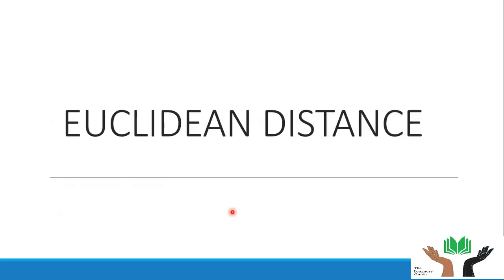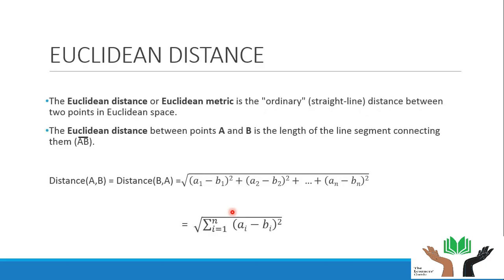First comes the Euclidean distance. The Euclidean distance is just a straight line between two points in a Euclidean space, or we can say any two vectors. Suppose we consider two vectors a and b, each of which has n features. Then the Euclidean distance between them is given by the square root of (a1 minus b1) squared plus (a2 minus b2) squared, up till (an minus bn) squared. Here a1, a2 up till an are the features present in a, while b1, b2 up till bn are the features present in b.